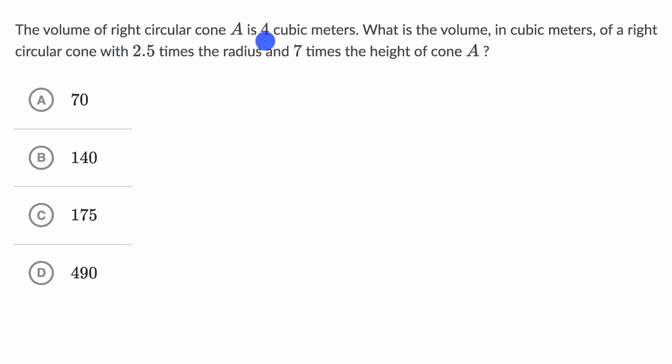The volume of right circular cone A is four cubic meters. What is the volume in cubic meters of a right circular cone with 2.5 times the radius and seven times the height of cone A? Pause this video and think about this on your own before we work through this together.